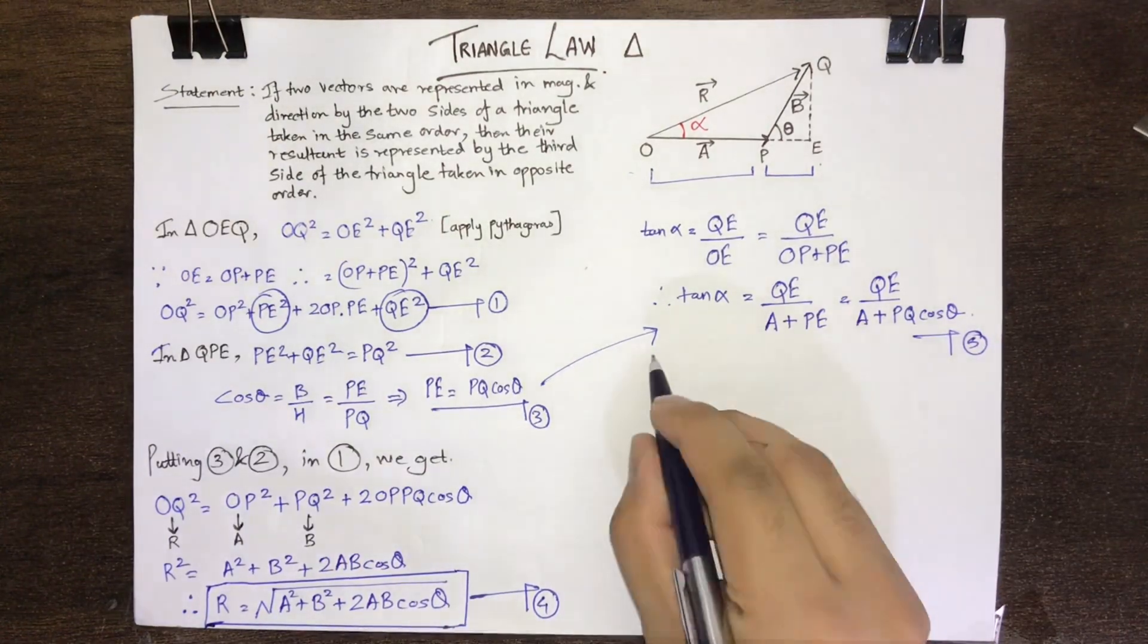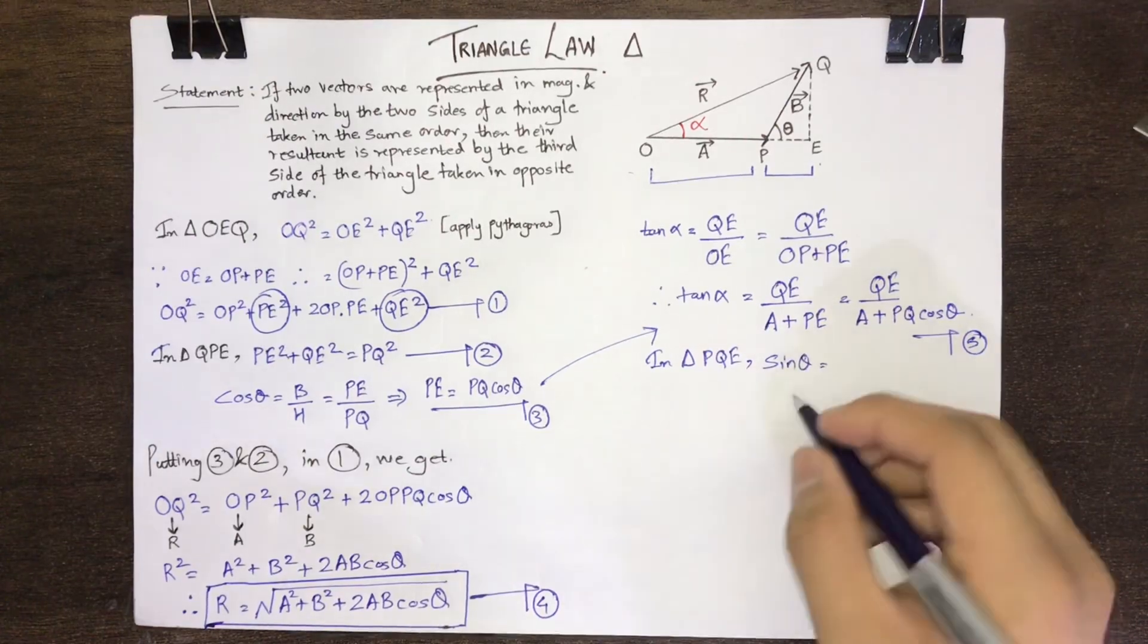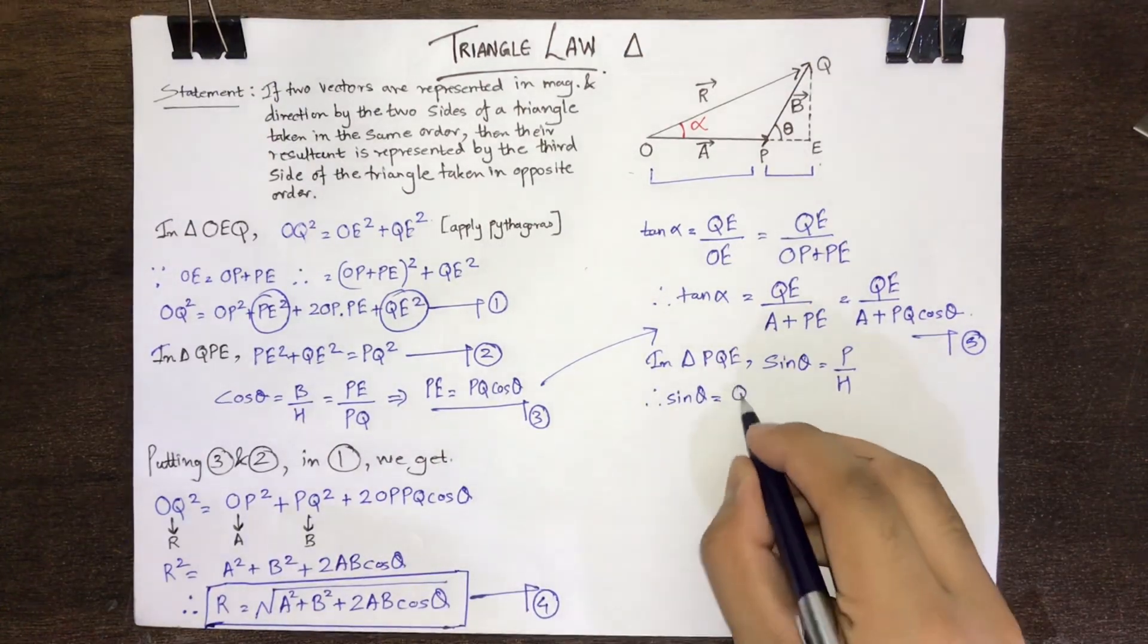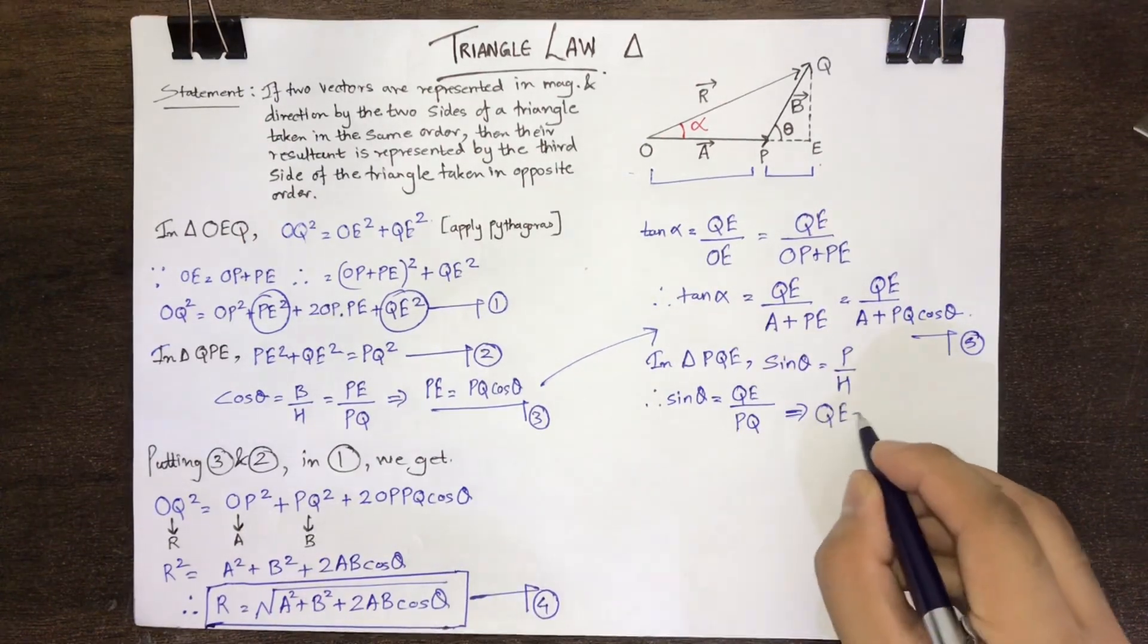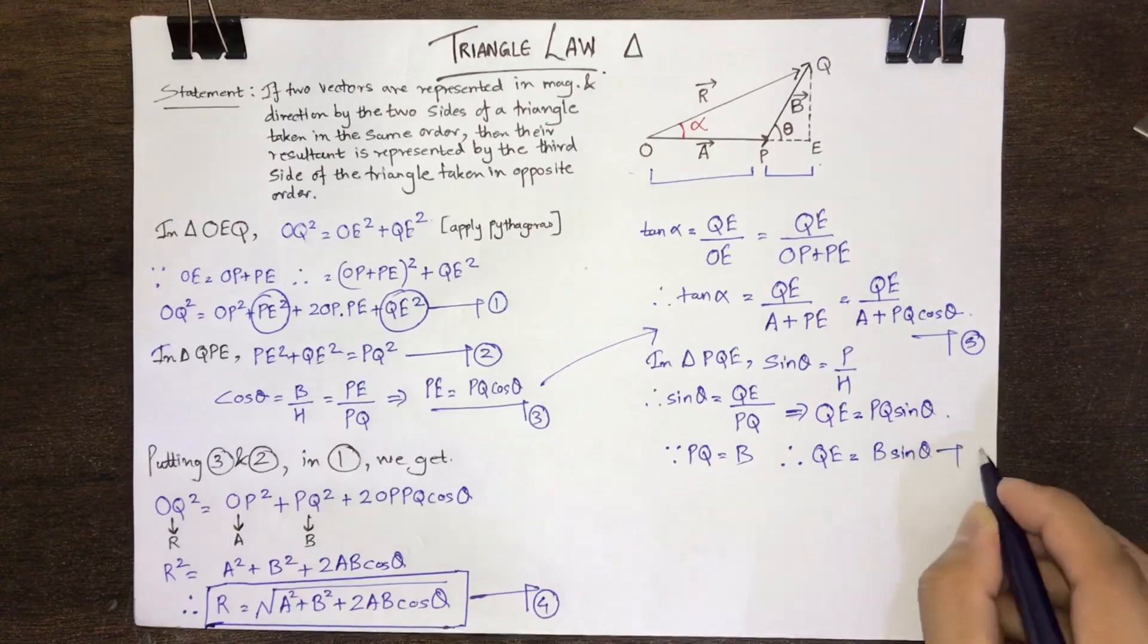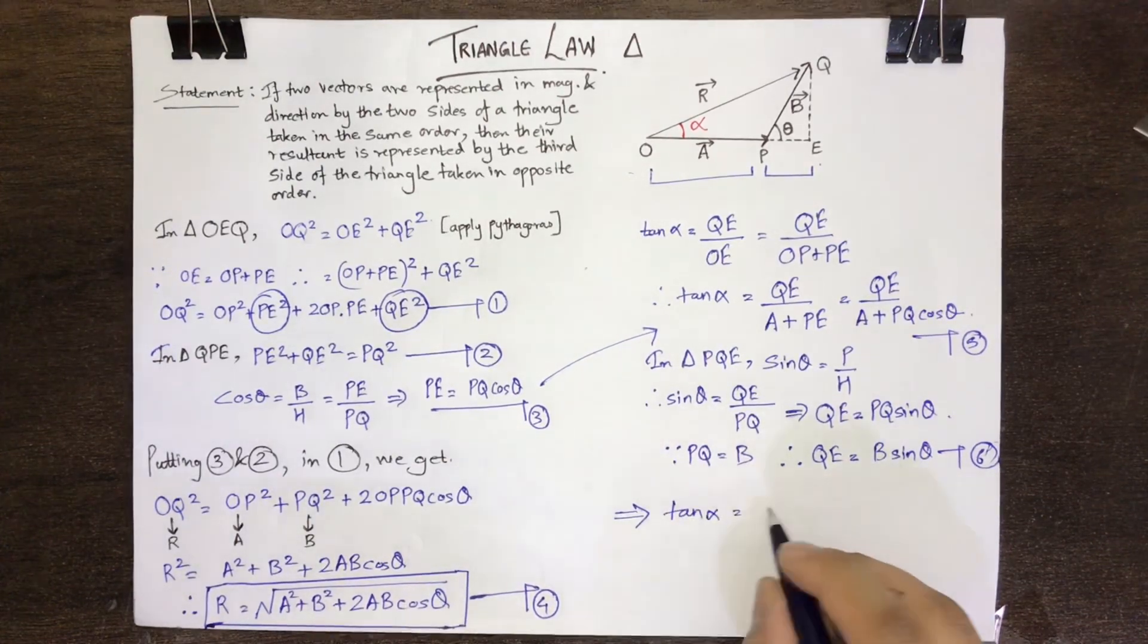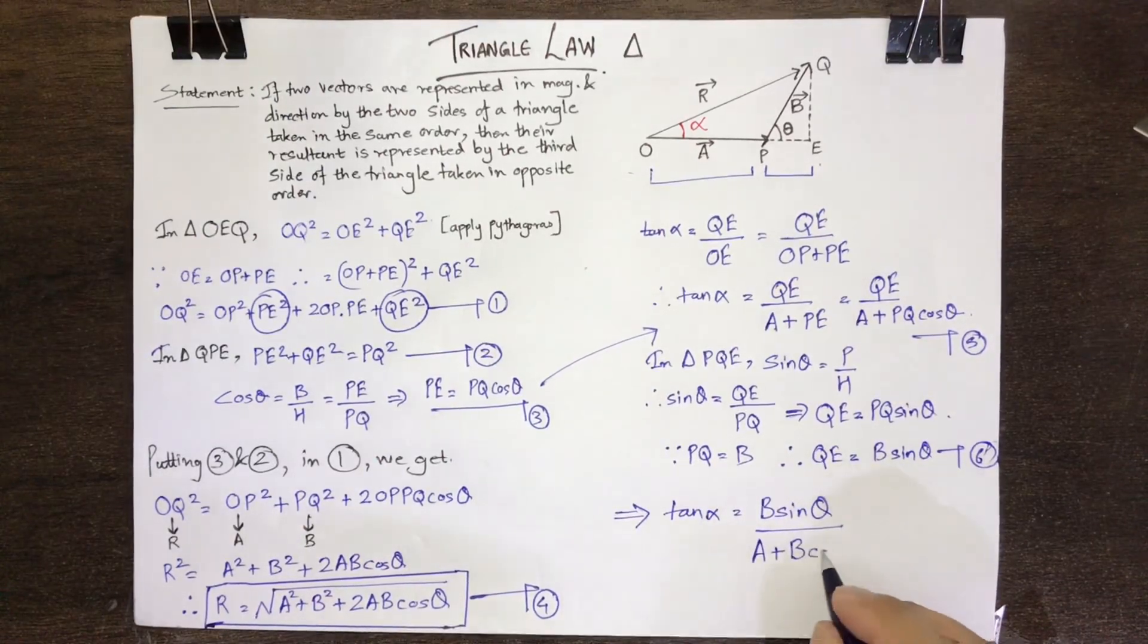Now again in triangle PQE, sin theta is equal to perpendicular upon hypotenuse. Therefore, sin theta is equal to QE upon PQ, giving us QE is equal to PQ sin theta. As PQ is equal to B vector, therefore QE will be equal to B sin theta. Mark it as equation 6. Therefore, using equation 6 in 5, we get a final expression as tan alpha is equal to B sin theta upon A plus B cos theta.